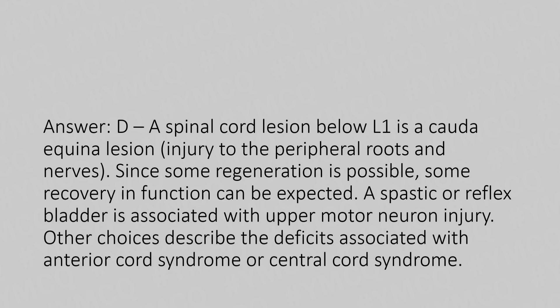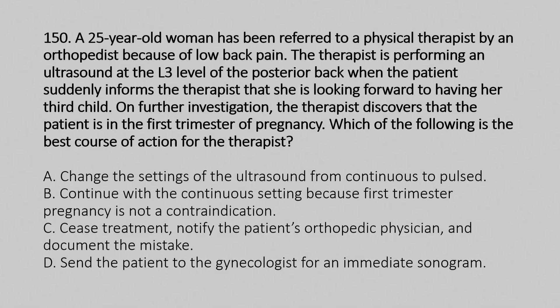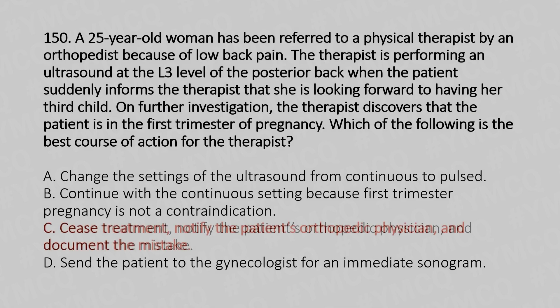Now let's move to question number 150. A 25-year-old woman is referred to a physical therapist by an orthopedist for low back pain. The therapist is performing ultrasound at the L3 level of the posterior back when the patient informs the therapist she is in the first trimester of pregnancy. Options for best course of action: Option A, change from continuous to pulsed ultrasound; Option B, continue as first trimester is not a contraindication; Option C, cease treatment, notify the orthopedic physician, and document the mistake; Option D, send the patient to a gynecologist for an immediate sonogram. The answer is Option C.